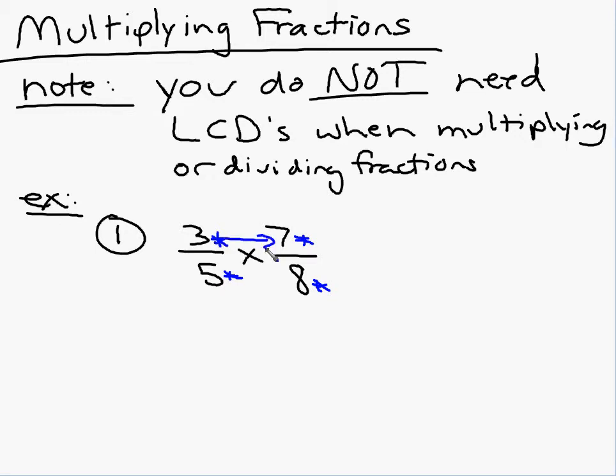If there's no common factors diagonally, all I've got to do is multiply across. What's 3 times 7? 21. What's 5 times 8? 40. And then you have to ask, is my fraction reduced? It is. So that one's very simple, but most of them aren't going to be that way.